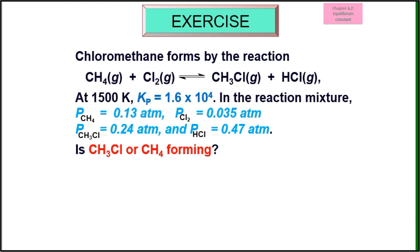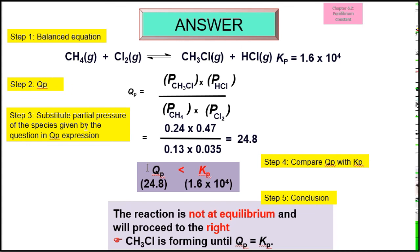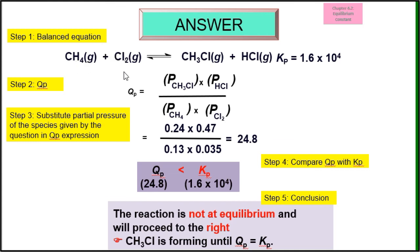The third example: the partial pressure of each species is given and Qp is calculated. Step 1: equation. Step 2: Qp expression. Step 3: substitute the partial pressure values. In this case, Kp is larger than Qp, meaning more reactant is formed. The system is not at equilibrium. To reduce the concentration of reactants — methane and chlorine — and increase the concentration of products — chloromethane (CH₃Cl) and hydrochloric acid — the system shifts to the right, forming more CH₃Cl until Qp equals Kp.